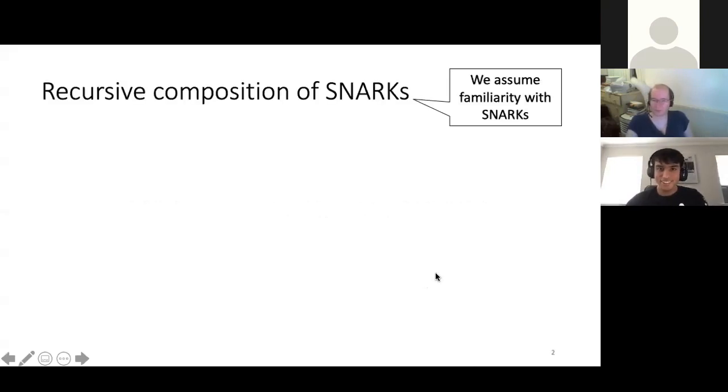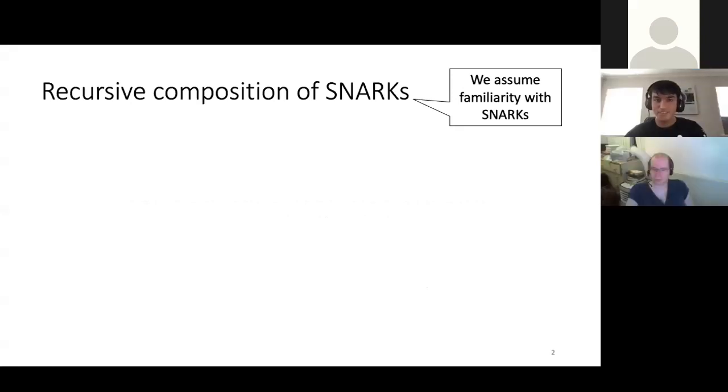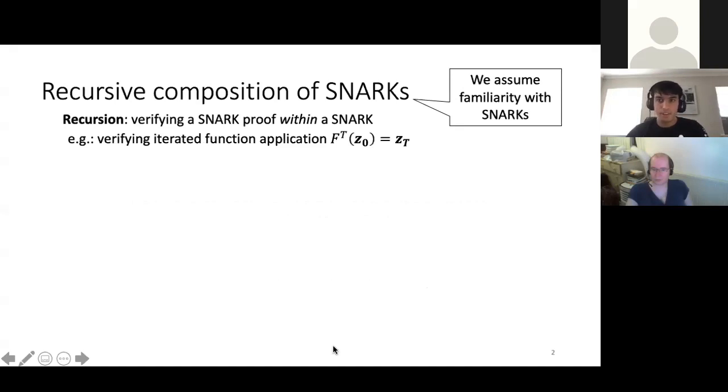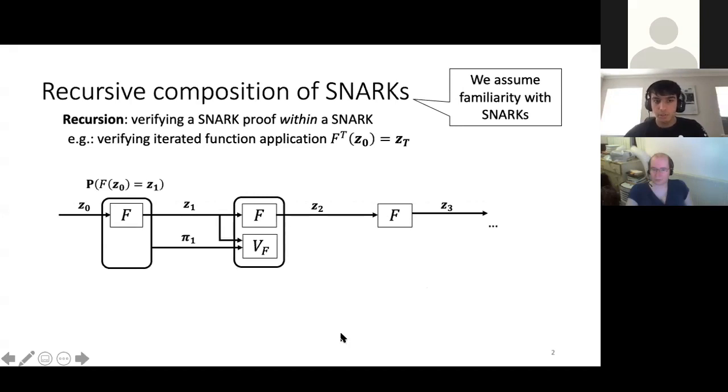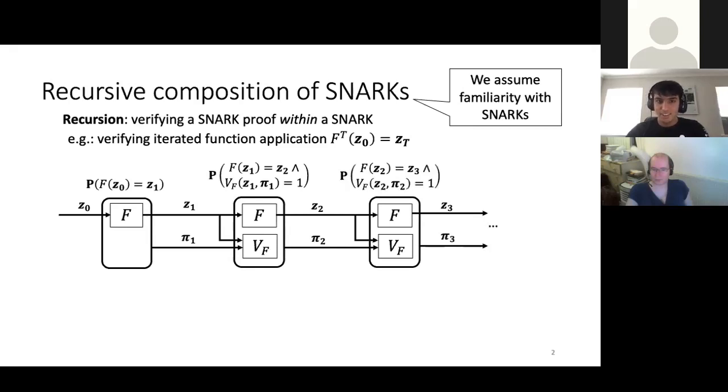So as you saw in the title, it's going to deal with recursive snarks. I'm going to see if everyone here is familiar with snarks. They may not be familiar with recursing them. Though if you saw part of Michael's talk earlier today, he started going into this, so this might be a recap. Recursion here means verifying a snark proof within a snark. An example where this comes up is verifying iterated function application, like f of f of x equals y. So here's an example of iterated function application. The strategy for proving this is to prove it step by step. First, you prove that f of z0 equals z1, and to check this, you just check the proof pi 1. In the next iteration, you prove that f of z1 equals z2, and that the proof pi 1 is valid. Therefore, when you check pi 2, by induction, you know that z2 equals f of f of z0.